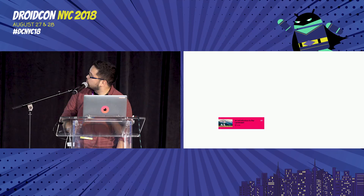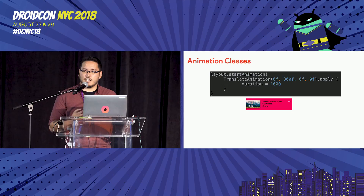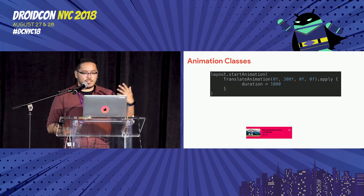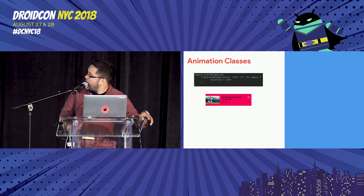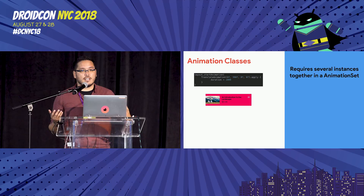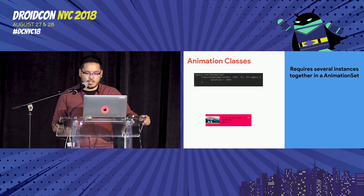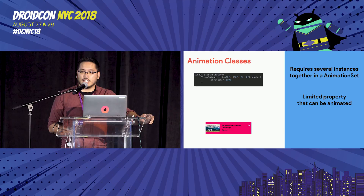Another option is to use animation classes. Here I'm using layout.startAnimation with a TranslateAnimation — there are other ones you can use. It works and requires very few lines of code. But it also has drawbacks: it requires several instances together in an AnimationSet if you want to synchronize different views and do those crazy material design things. It has limited properties that can be animated. And it's view pixel only — so depending on how you do it, when you try to tap it later, it's not going to have feedback.